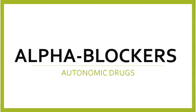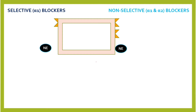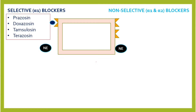Alpha blockers can be classified into two groups: selective alpha blockers, which only act on alpha-1 adrenergic receptors, and non-selective blockers, which act on both alpha-1 and alpha-2. Selective alpha-1 blockers include prazosin, doxazosin, tamsulosin, and terazosin — you can see the suffix '-osin'. They inhibit alpha-1 receptors.